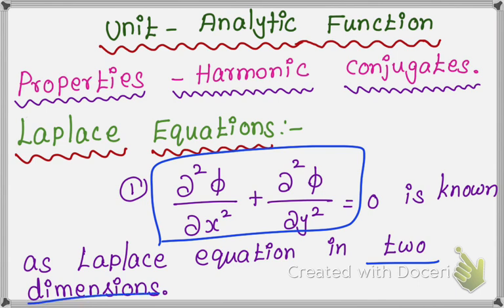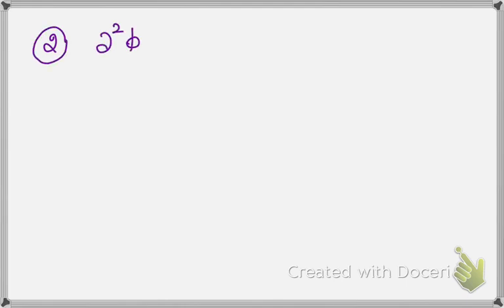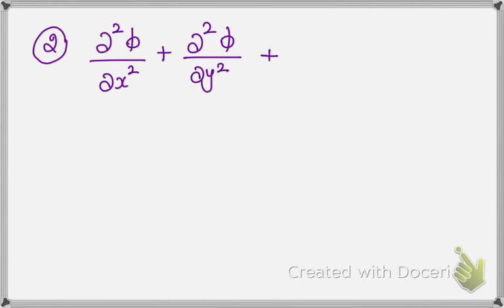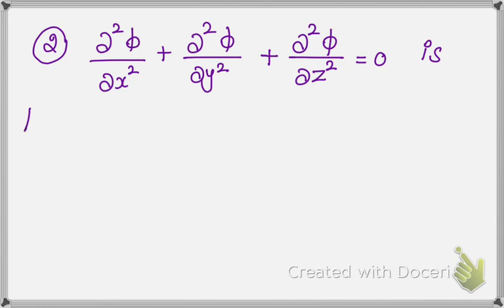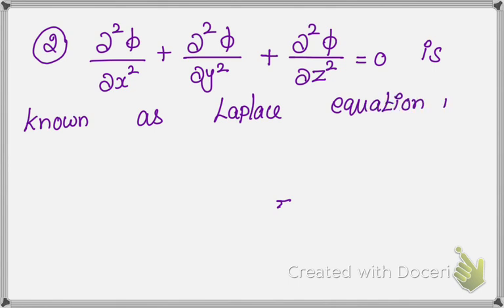Two dimensions means the equation has the terms x and y — x square, y square. So it is in the form of two dimensions. Next, equation number two: ∂²y/∂x² + ∂²y/∂y² + ∂²y/∂z² = 0, which is known as the Laplace equation in three dimensions.